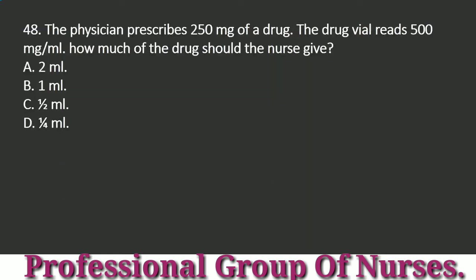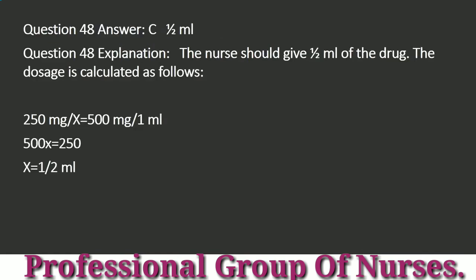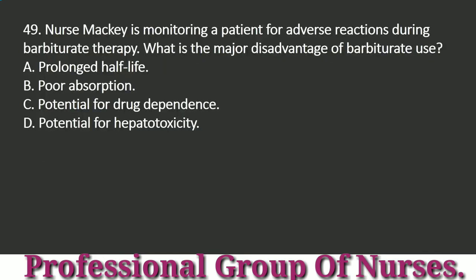Question 48: The physician prescribes 250 mg of a drug. The drug vial reads 500 mg per mL. How much of the drug should the nurse give? a. 2 mL. b. 1 mL. c. 1/2 mL. d. 1/4 mL. Answer: c. 1/2 mL. Explanation: The nurse should give 1/2 mL of the drug. The dosage is calculated as follows: 250 mg / x = 500 mg / 1 mL; 500x = 250; x = 1/2 mL.